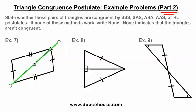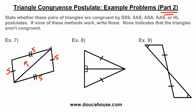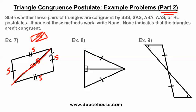Let's use that information to solve number seven. This side is congruent to this side. This side is congruent to this side. And since the triangle on the top is sharing a side with the triangle on the bottom, that middle side is congruent to itself. So looking at the triangle on the top, I have side, side, side. Looking at the triangle on the bottom, I also have side, side, side. Since every side has a corresponding congruent side, I can prove these triangles are congruent by the side-side-side postulate. If two triangles share a side, that side has to be congruent to each other.